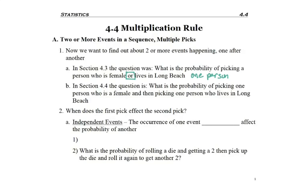Now we're going to start solving problems that read 'What is the probability of picking one person who is female and then picking one person who lives in Long Beach?' In the end, we'll have picked two people. So when we create these probability fractions, we need to worry about the second pick and if something's changed.